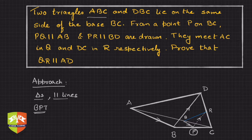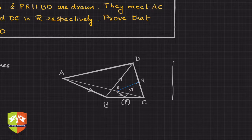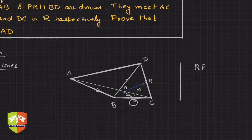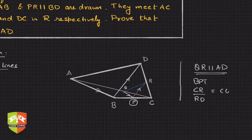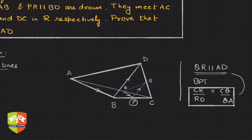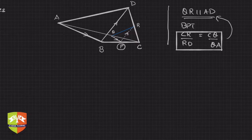We can work backwards: QR is to be proven parallel to AD. By the converse of BPT, if we can prove that CR/RD = CQ/QA, then QR will be parallel to AD. So our target is to prove CR/RD = CQ/QA.